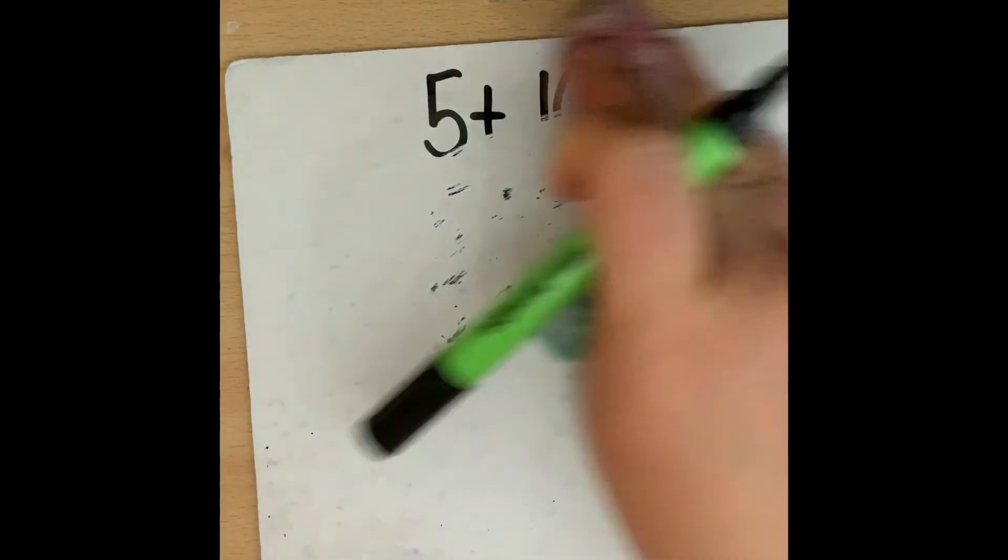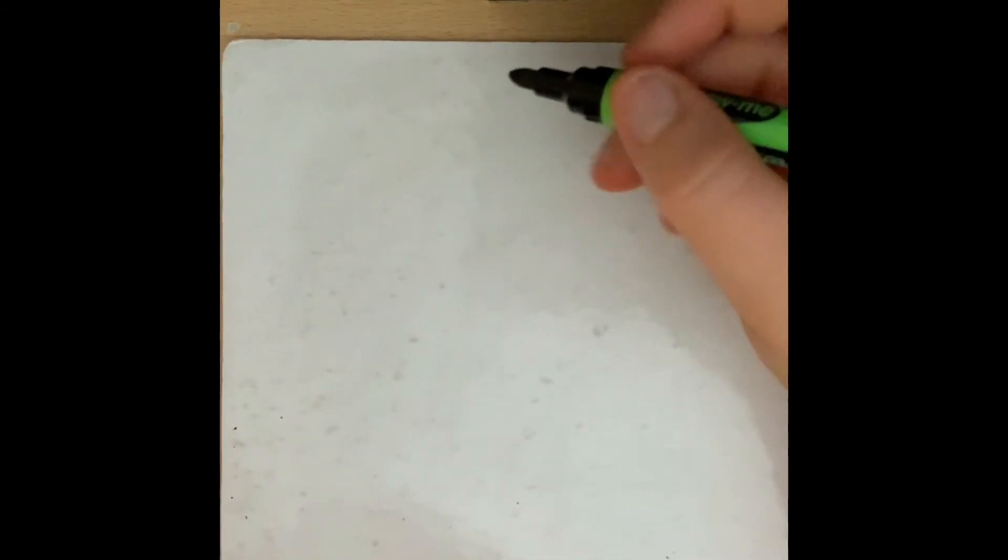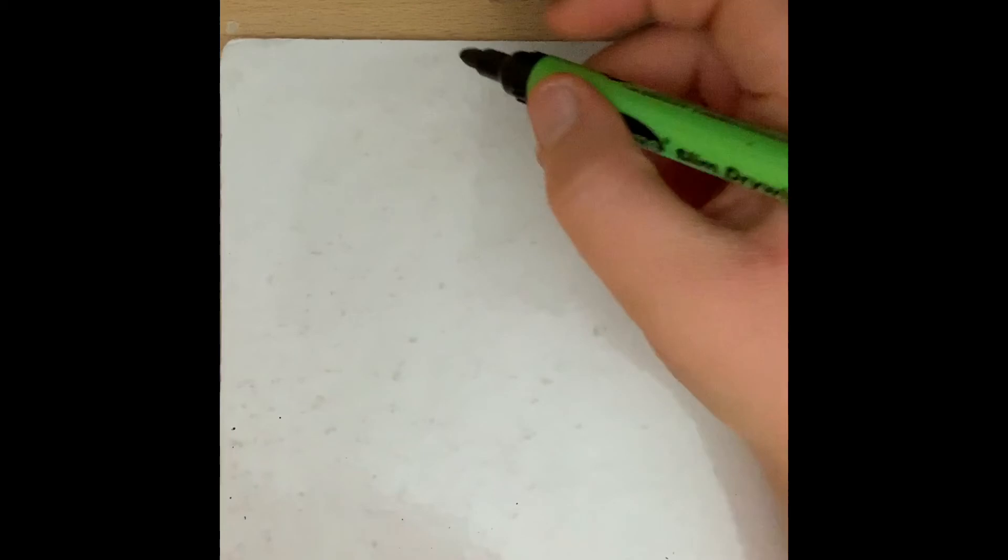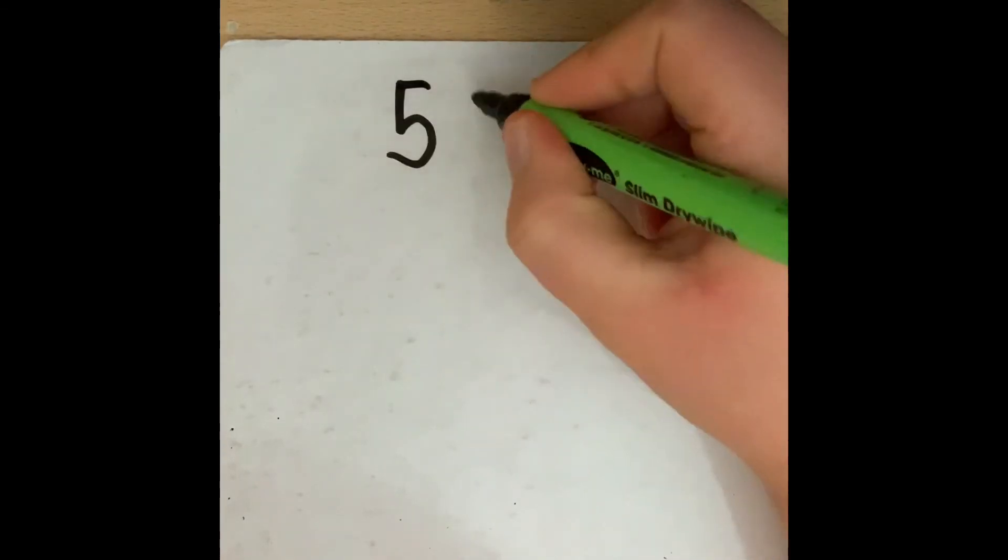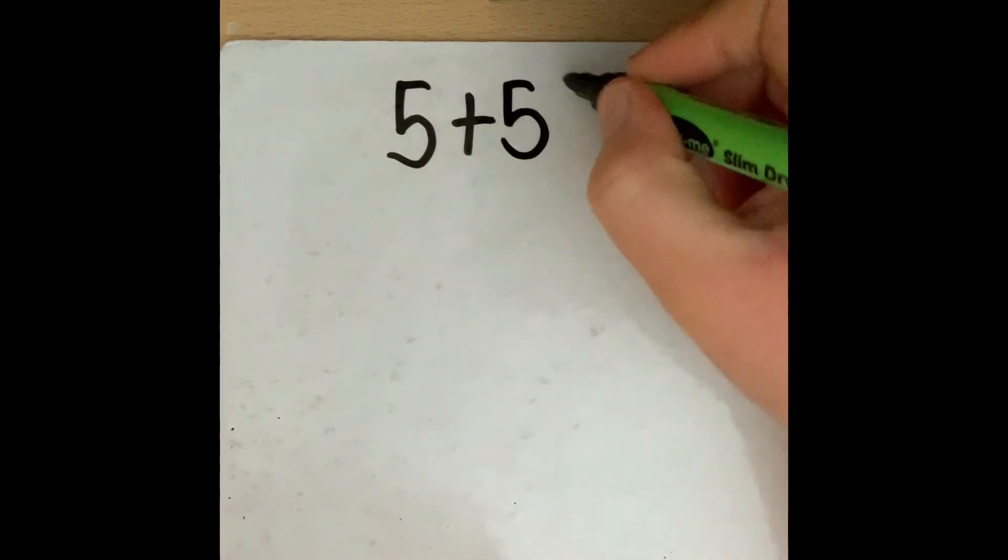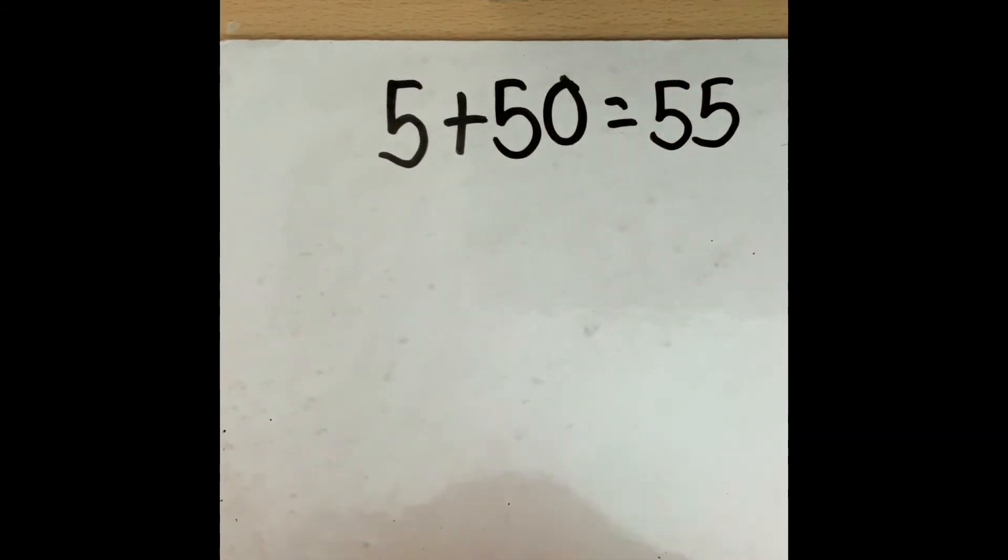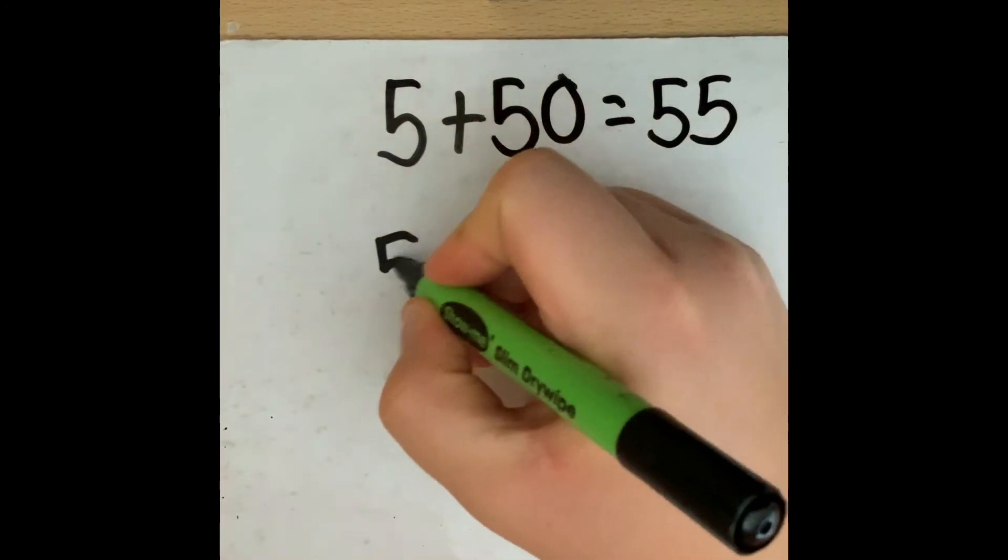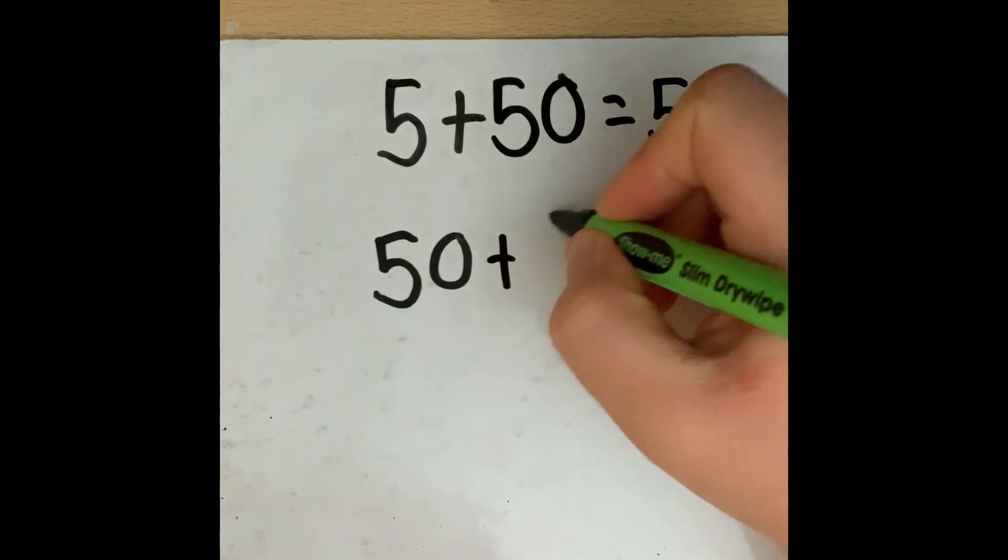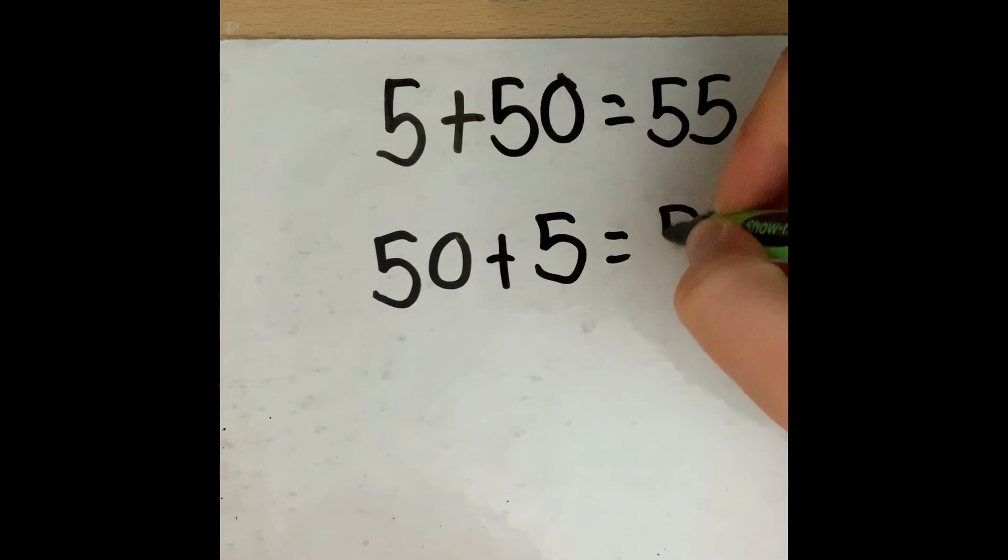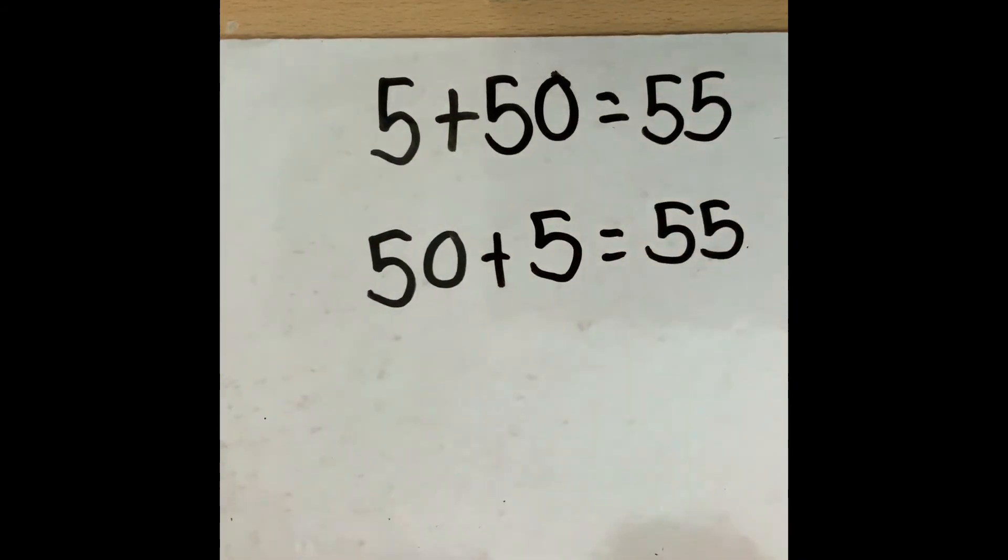We can use our knowledge of commutativity to help us with this as well. So for example if I have 5 add 50 which I know is 55. If I saw another question that had 50 add 5 I know that the answer will still be 55.